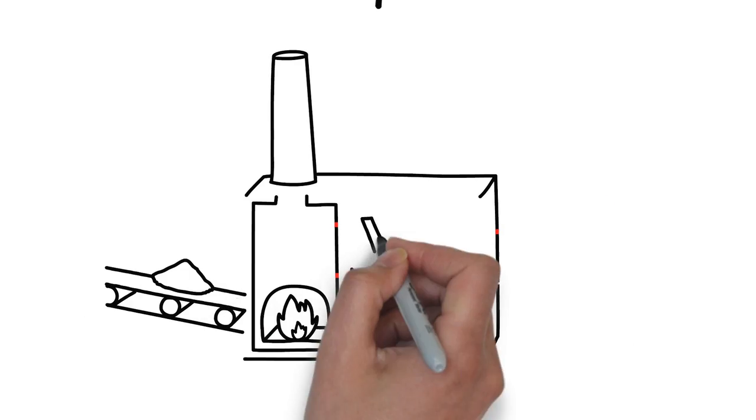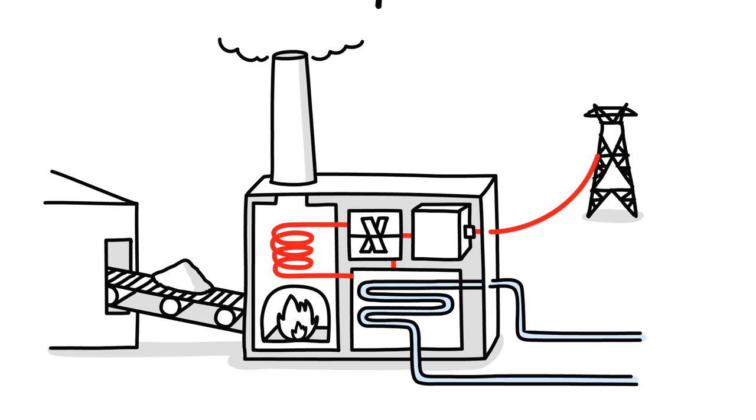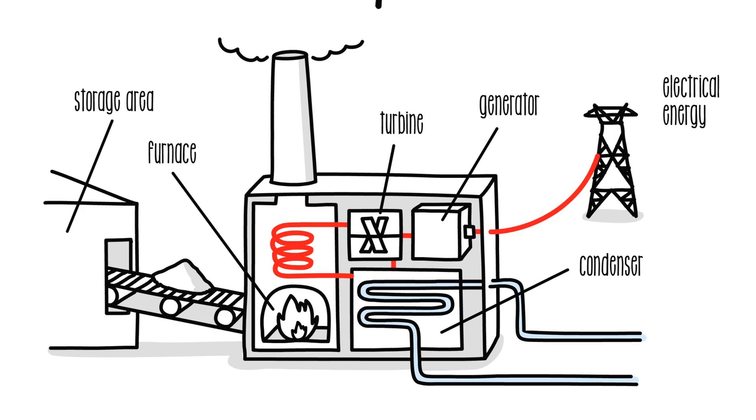At times, it is used to generate electricity. It consists of a storage area from which the material falls into the furnace and heats the water, traveling through the conduits. This turns into steam, and the steam goes to a turbine. This is connected to a generator that produces electricity. The steam goes to a condenser that chills it, turning it into water, so that the process can start again.